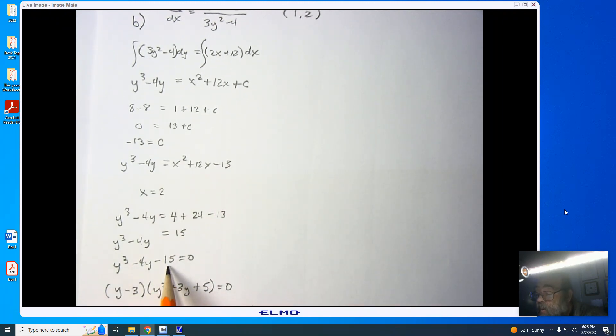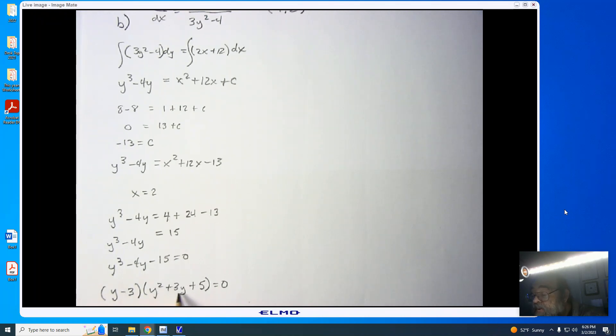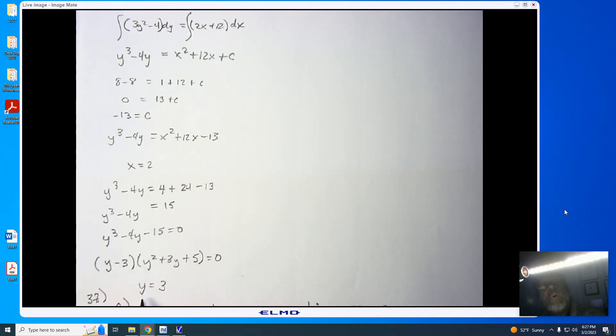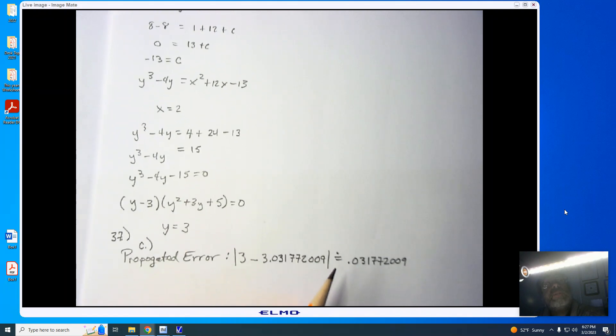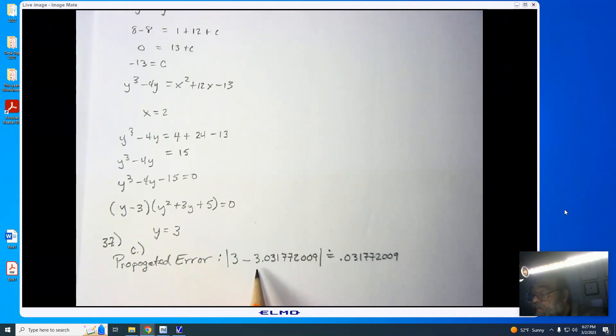I then have y cubed minus 4y minus 15 equals 0, which allows me to work with the synthetic division, and the factors that I'm working with are 1, 3, 5, and 15. Only the 3 works, leaving me with (y minus 3) times (y squared plus 3y plus 5), equaling 0. This is where I get the 3. We now go to our propagated error in c. We take the absolute value of 3 minus 3.031772009, and the propagated error is 0.031772009.